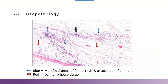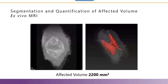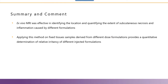Histopathology confirmed the areas of necrosis intermixed with unaffected normal fat tissue. The ex vivo MRI enabled segmentation and exact volume measurement of the affected areas. In conclusion, the ex vivo MRI was effective in identifying the location and quantifying the extent of subcutaneous necrosis and inflammation caused by the test compound, allowing us to measure the relative irritancy of different dose formulations.